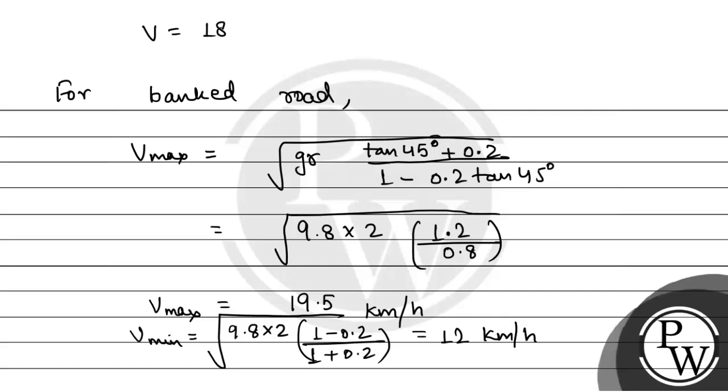And we have been given v for the banked road is 18.5 kilometers per hour. So we can see that this given velocity of the cyclist lies between Vmax and Vmin, so the cyclist will pass the road without slipping.